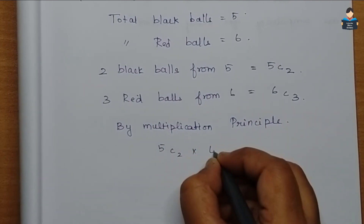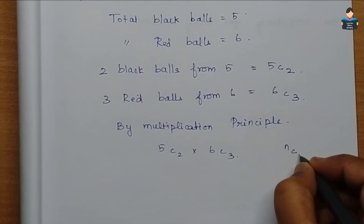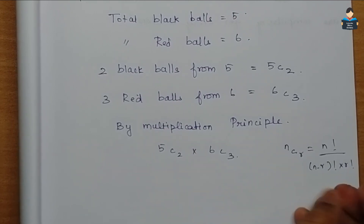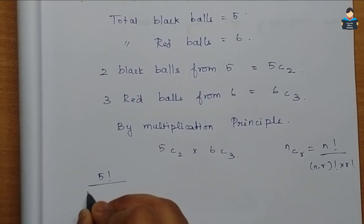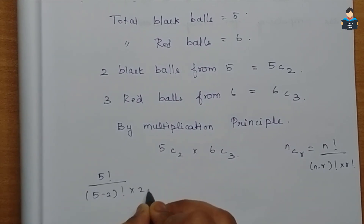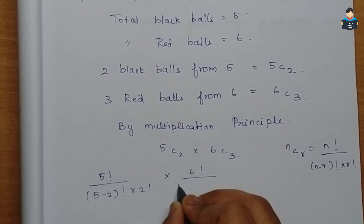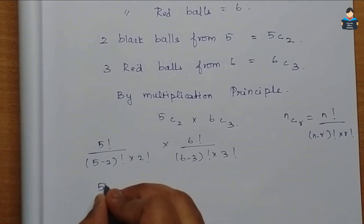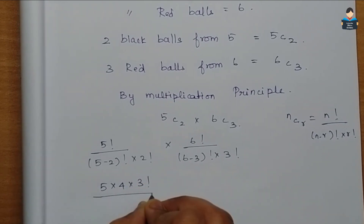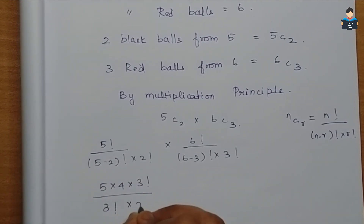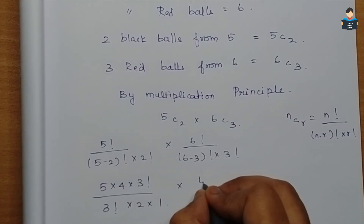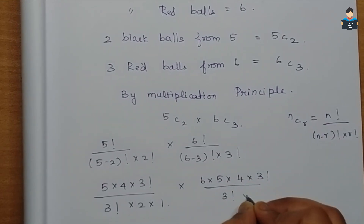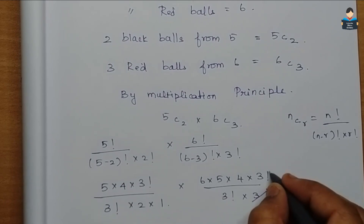By the multiplication principle, the number of ways is 5C2 into 6C3. Using nCr = n factorial by (n−r) factorial into r factorial: 5 factorial by (5−2) factorial into 2 factorial, into 6 factorial by (6−3) factorial into 3 factorial. Expanding: 5 into 4 into 3 factorial divided by 3 factorial into 2 into 1, into 6 into 5 into 4 into 3 factorial divided by 3 factorial into 3 factorial. The 3 factorials cancel.